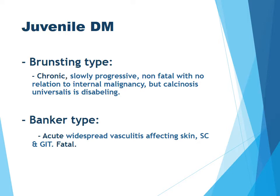Juvenile dermatomyositis has two variants. The chronic Brunsting type is slowly progressive, non-fatal, with no relation to internal malignancy, but calcinosis universalis is likely if not diagnosed and treated early, causing lifelong disability. The Banker type is an acute, fatal form with widespread vasculitis affecting skin, subcutaneous tissue, gastrointestinal tract, and internal organs — fatal if not diagnosed promptly.